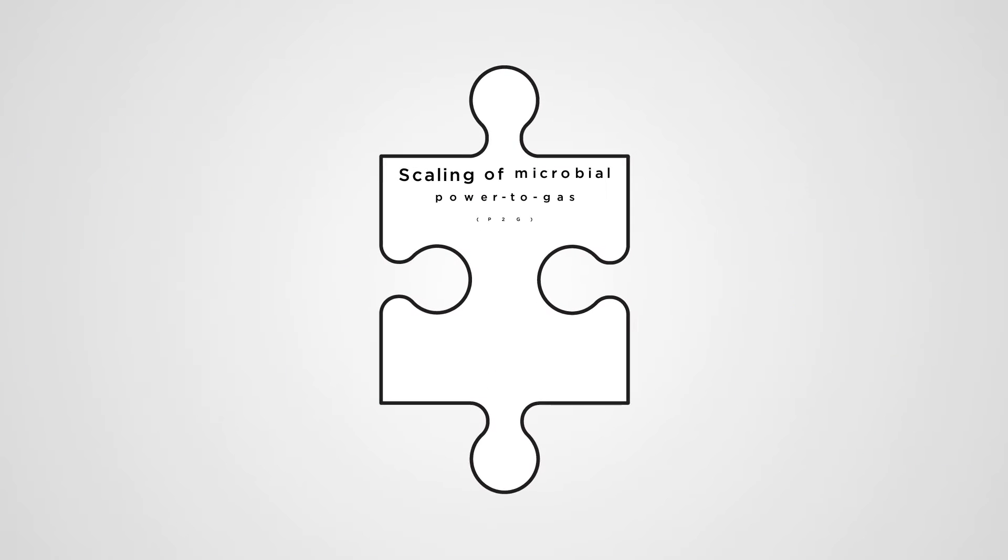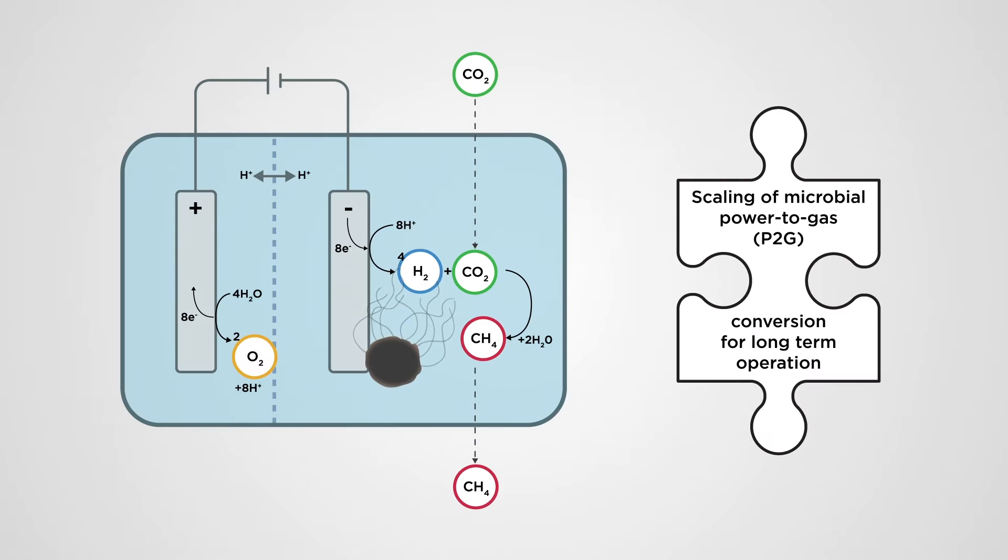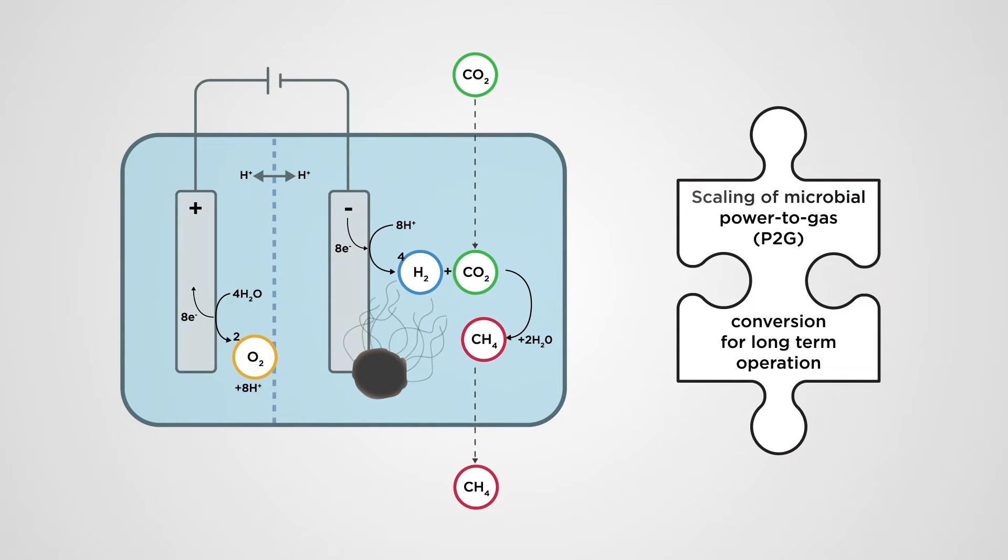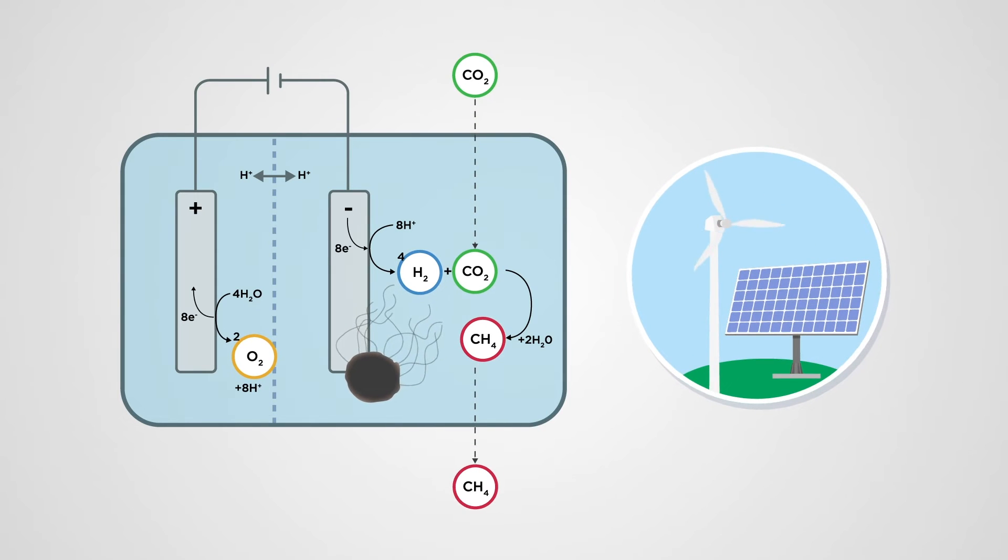In another study, we assessed the potential for a new electromethanogenesis P2G system based on a methanogenic bacterium which uses atmospheric CO2 and hydrogen to produce methane from excess renewable electricity supplies.